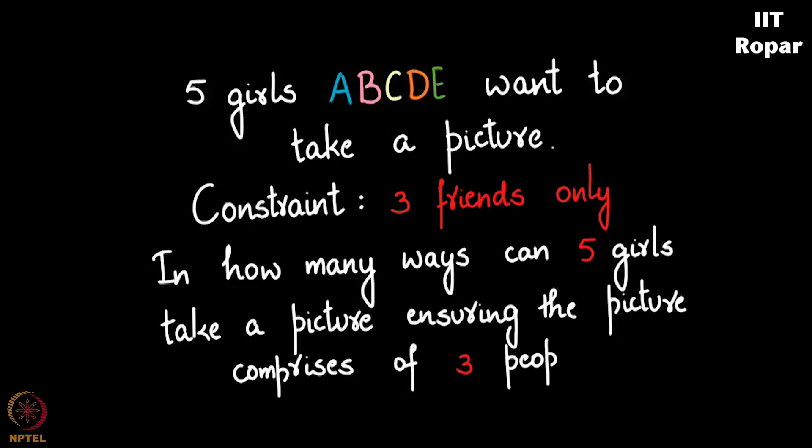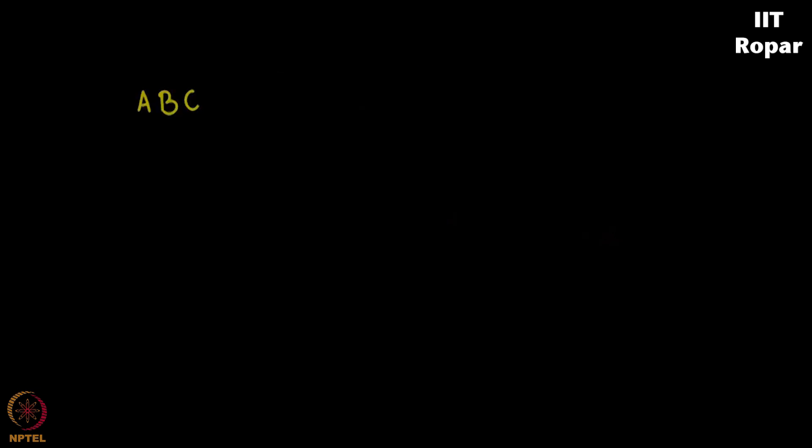Now A, B, C let's say comes forward and as we have seen there are three factorial ways in which they can take a picture. And then A, B, D comes forward and C, E steps back, and you have three factorial ways.